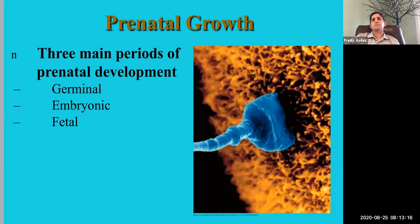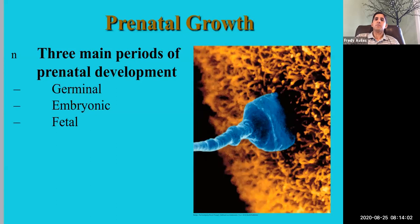Assuming the zygote has been fertilized, that starts the periods of prenatal development. There are three main periods: the germinal period, the embryonic period, and the fetal period. You can see an enlarged image of a sperm trying to fertilize the ovum — it has reached the ovum and is trying to release its genetic material. The ovum is hundreds of times larger than the sperm.